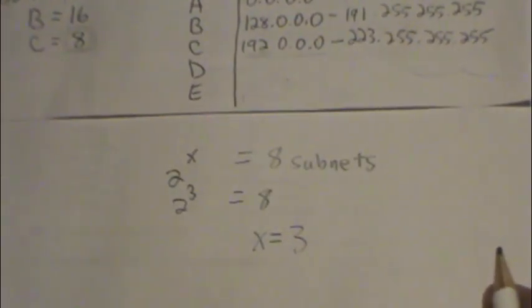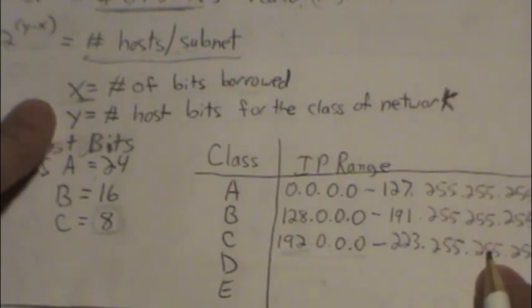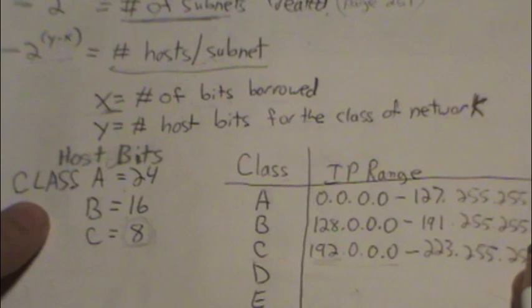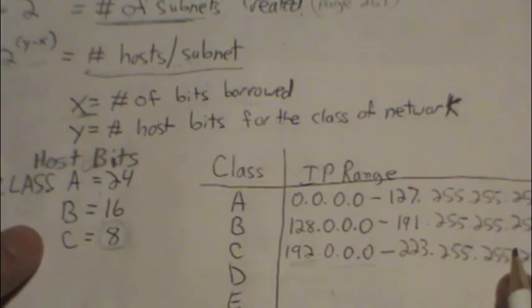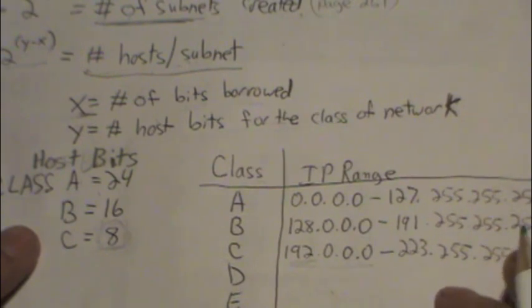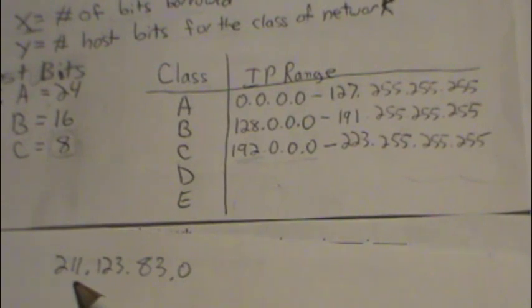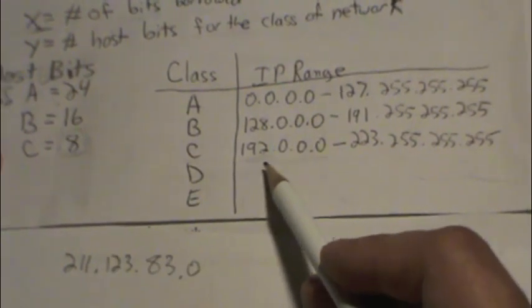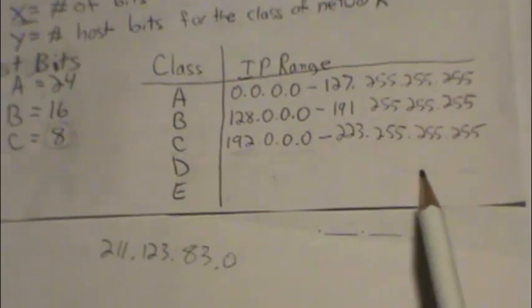So the next piece of information that we need is y. y equals the number of host bits, and if we look at our little table here, we have to figure out what range our address is in that we're talking about. If we look at our address, we have a 211. 211 falls between 192 and 223, so that means we have a class C address.